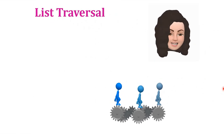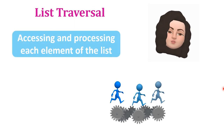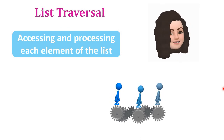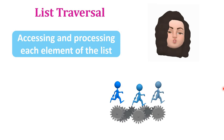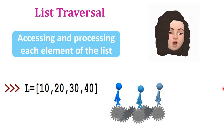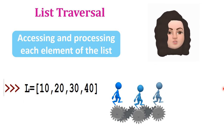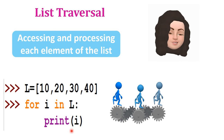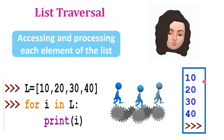Traversal means accessing and processing every element of the list one by one. We traverse a list using the for loop, just like traversing a string. Declare a list L = [10, 20, 30, 40]. Then: for i in L: print(i). This prints all elements one by one — 10, 20, 30, 40. Accessing and processing each element one by one is known as traversal.